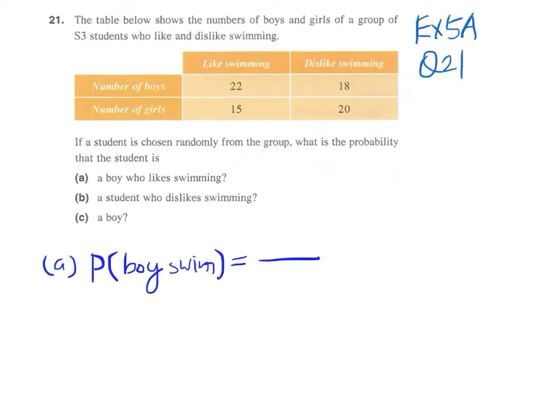Therefore, we can sum this up. There are 40 boys and a total of 35 girls, so the total number of boys and girls will be 75.